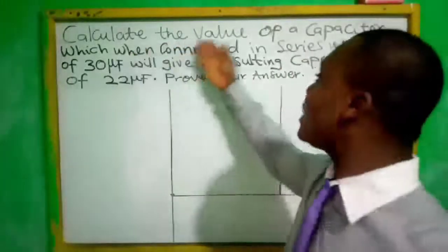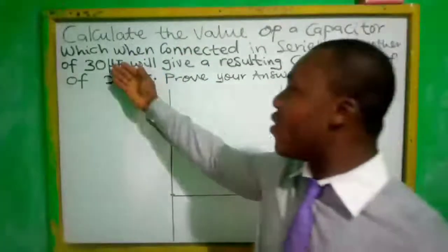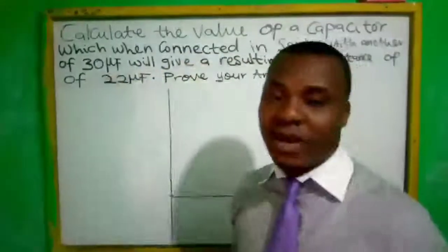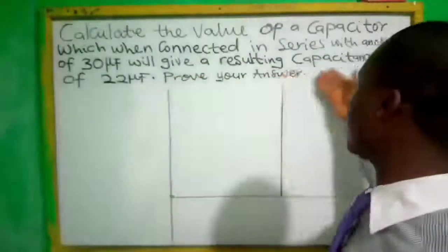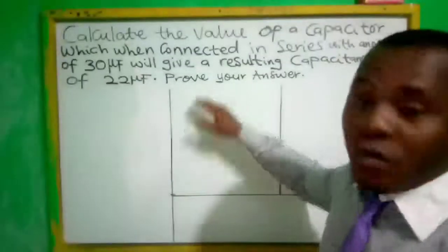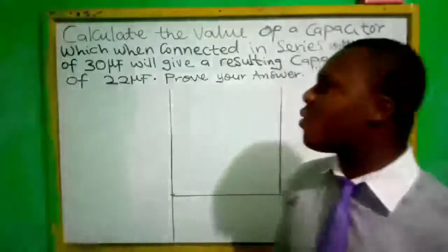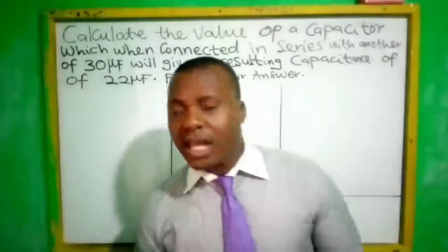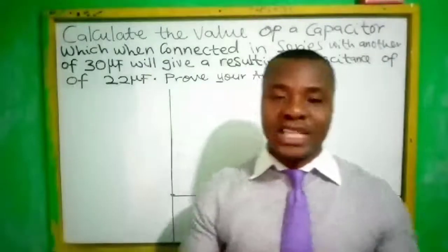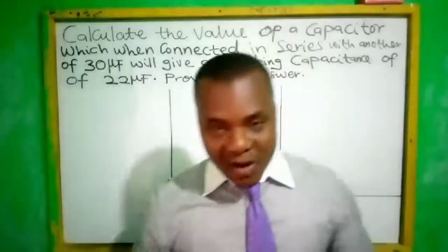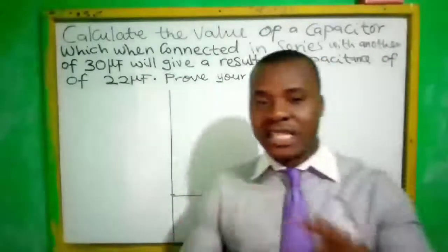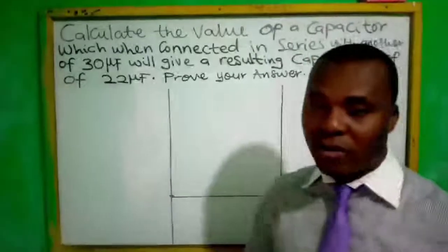The question says: calculate the value of a capacitor which, when connected in series with another of 30 microfarad, will give a resulting capacitance of 22 microfarad. The question is telling us there is a capacitor connected to 30 microfarad in series that, when worked out, will give 22 microfarad.